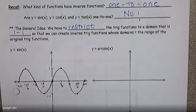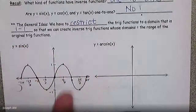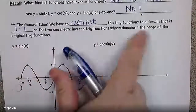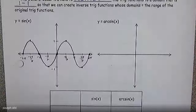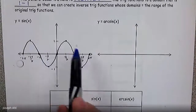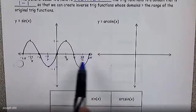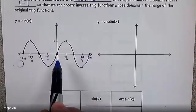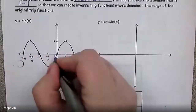Remember, when you find an inverse, you take the x and y values and switch them. So if we know domain and range represent x and y values, those are going to get switched. Here's a graph of sine x — good old sine x from negative 2π to positive 2π. You can see we're definitely going to fail the horizontal line test.